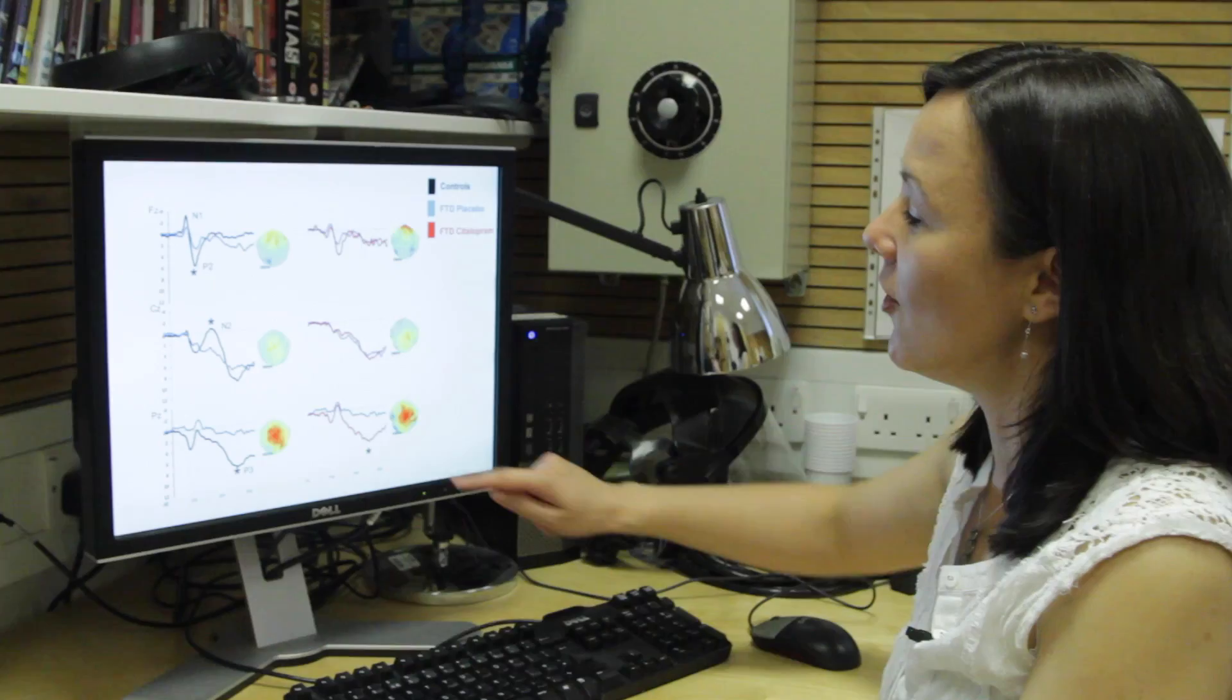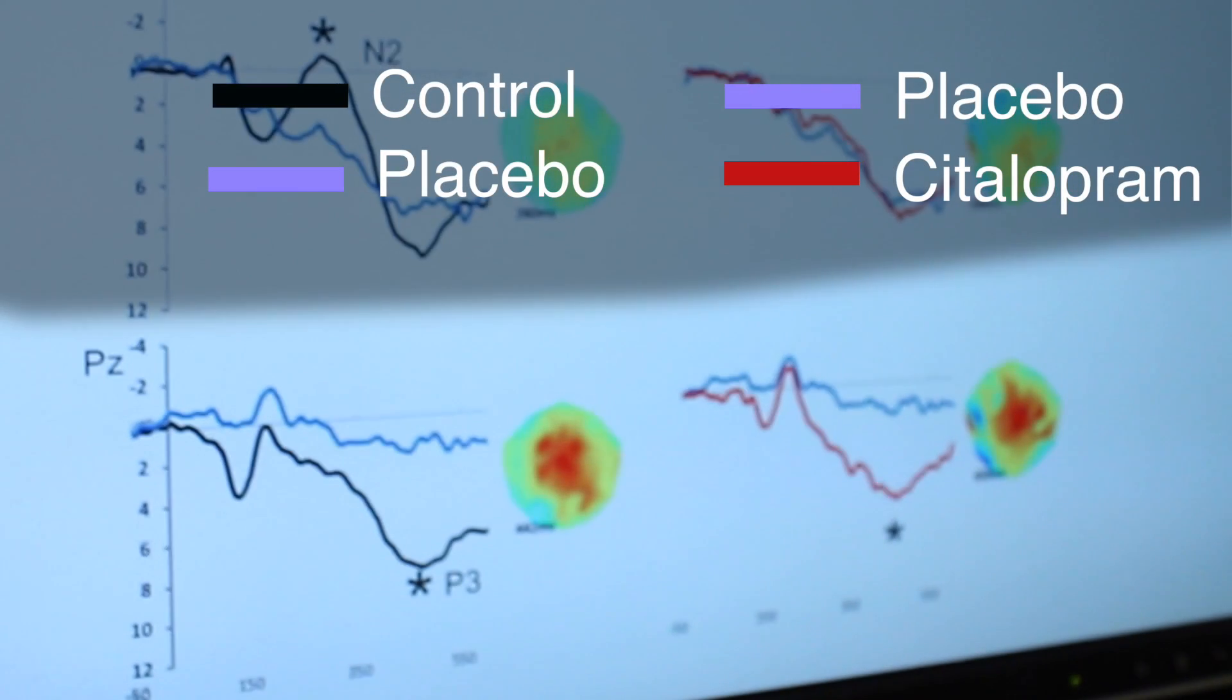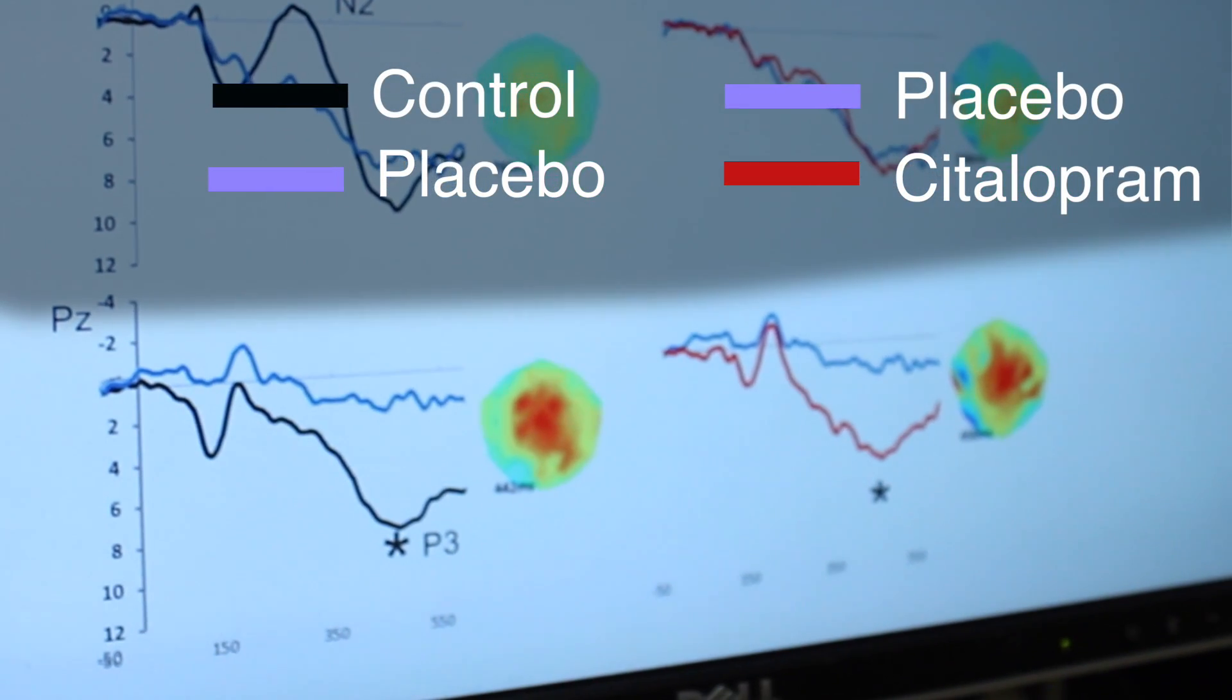When we compare the placebo with the citalopram session, we can see that citalopram has an effect on the P3 here, restoring it almost to the same level as the controls.